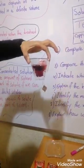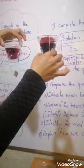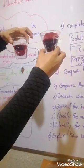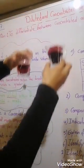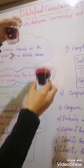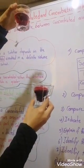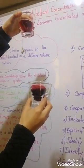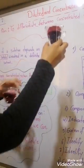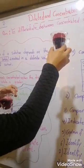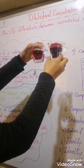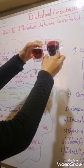For example, here we put only one tea bag, and here we put two tea bags. Here the solution is less intense, and here more intense. So in this case we have a diluted solution because the amount of solute is smaller, and here the amount of solute is bigger, so we have a concentrated solution.